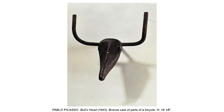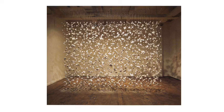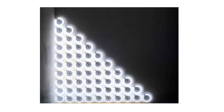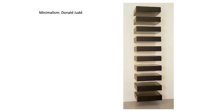Picasso took his handlebars and his bicycle seat and cast them in bronze and made a bull's head out of it. She blew up a building and this is the chalk left over, then installed it — and here she's throwing words off a cliff. Using light again, Dan Flavin uses neon. We'll see minimalism again, but here's Donald Judd — it's precise, it's clean, it's mathematical.